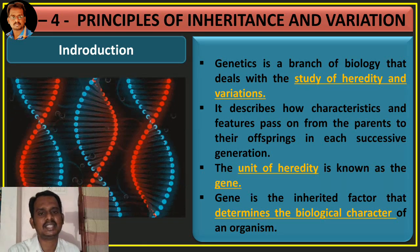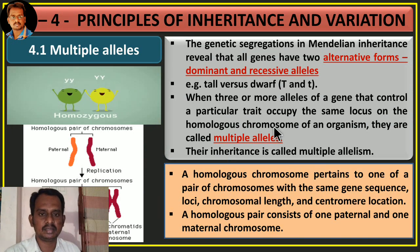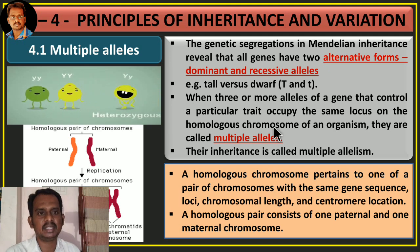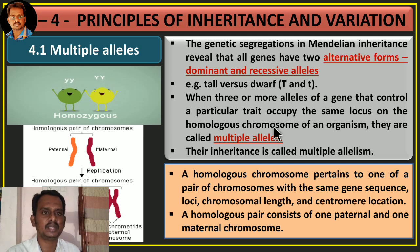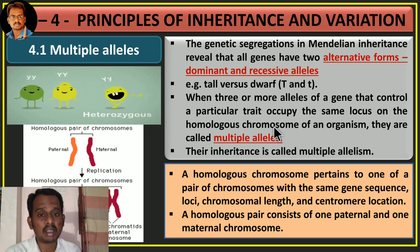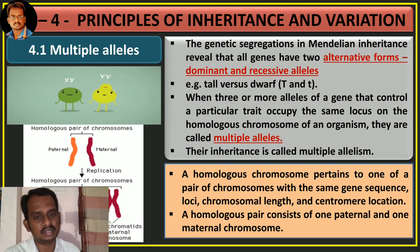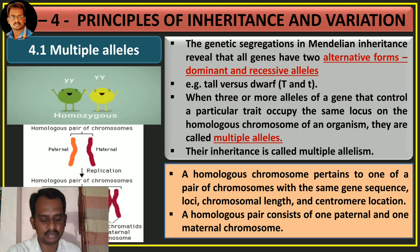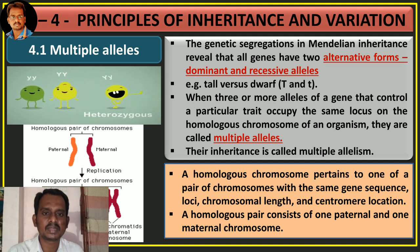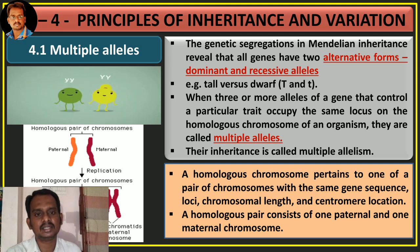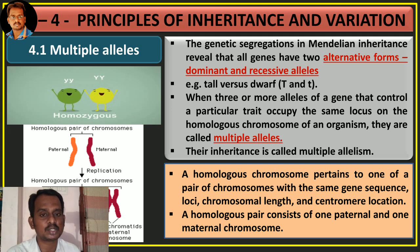The first concept we are going to discuss in this chapter is alleles and multiple alleles. Alleles are nothing but the alternative form of a gene. What is the main function of a gene? It is a factor that is responsible for transferring of character from the parents to offspring.